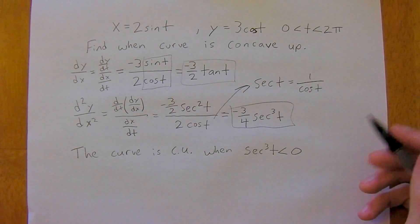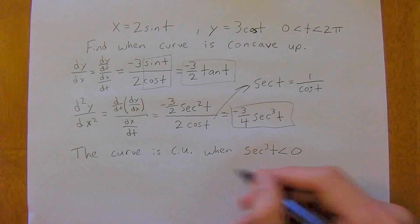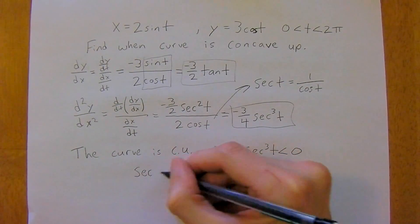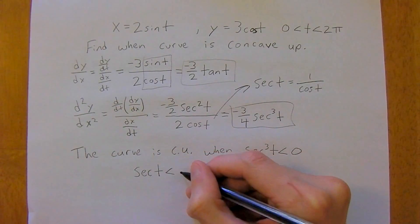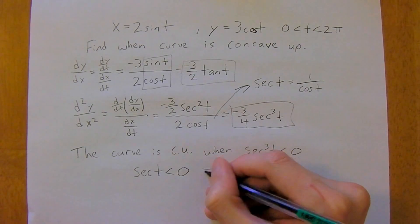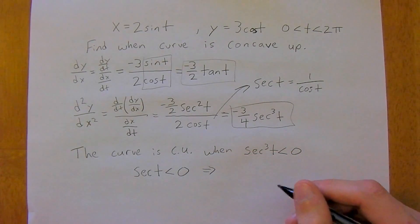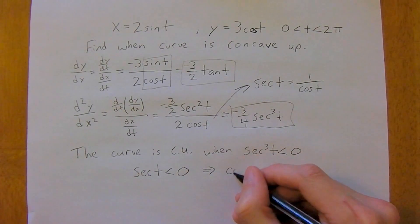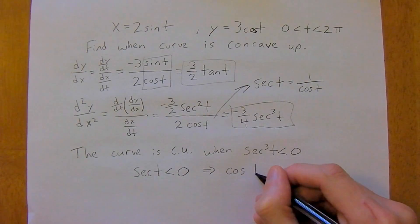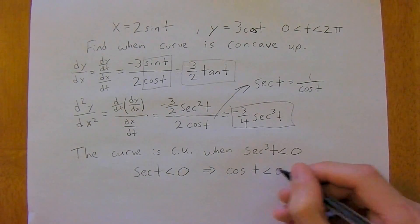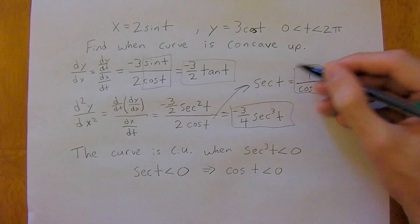And that will happen when secant t is less than 0. Or another way we could think about this is when cos t is less than 0. So we're just using this trig identity here again.